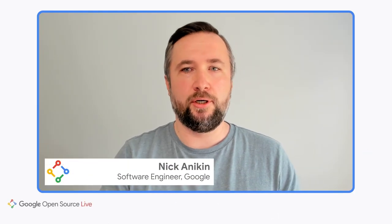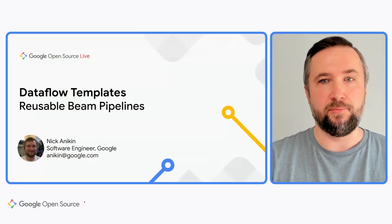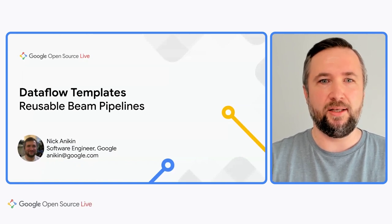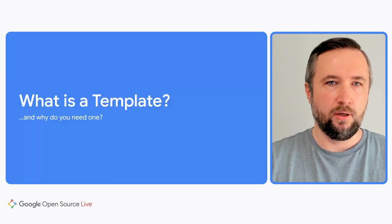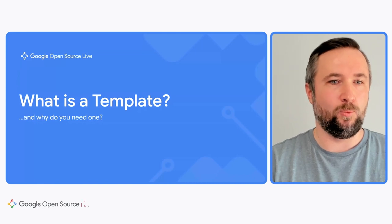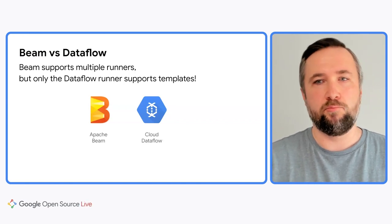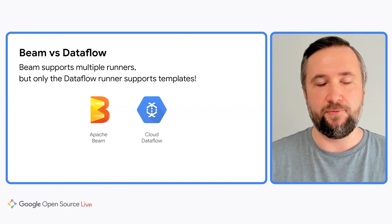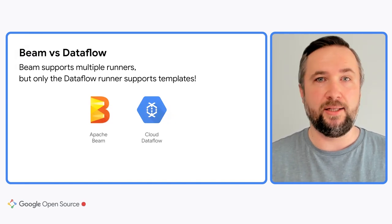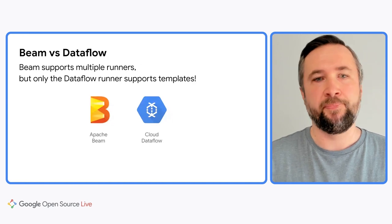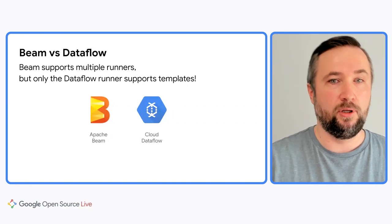Hi, everyone. My name is Nick, and I'm a software engineer working on Google Cloud Dataflow and Apache Beam in Durham, North Carolina. Today, I'm going to talk about Dataflow templates. I'll give a brief introduction to templates, explain why you might need them, how to create and use one, and of course how to contribute your templates to open source. So, what is a template, and why do you need one? Apache Beam supports multiple runners, and a runner is something that runs Beam pipelines on a specific platform, such as Apache Flink, Apache Spark, Google Cloud Dataflow, and others. You write your pipeline using Beam SDK once, but then you can execute the same code on a different platform. Templates are supported only on Cloud Dataflow at the moment.